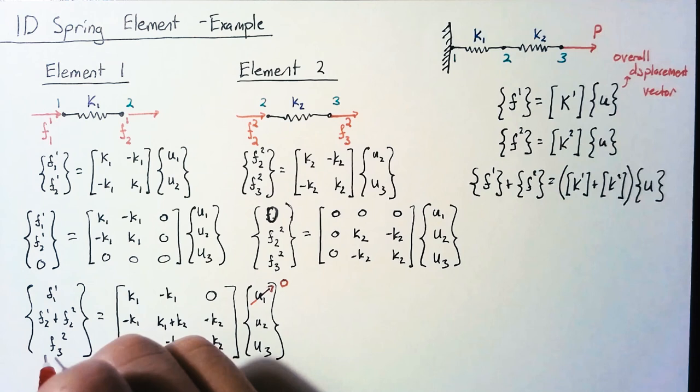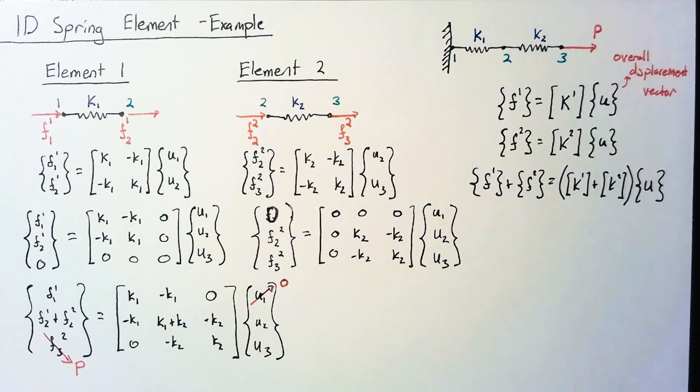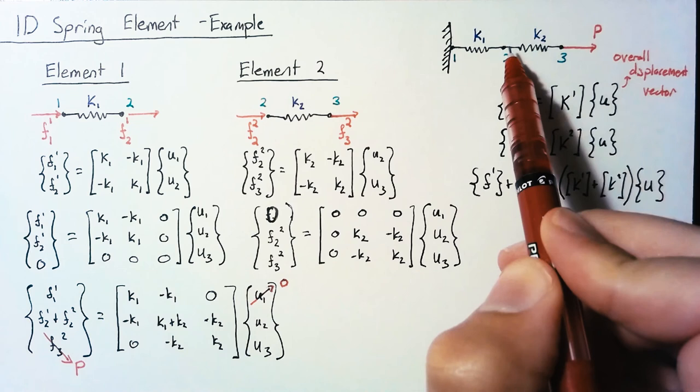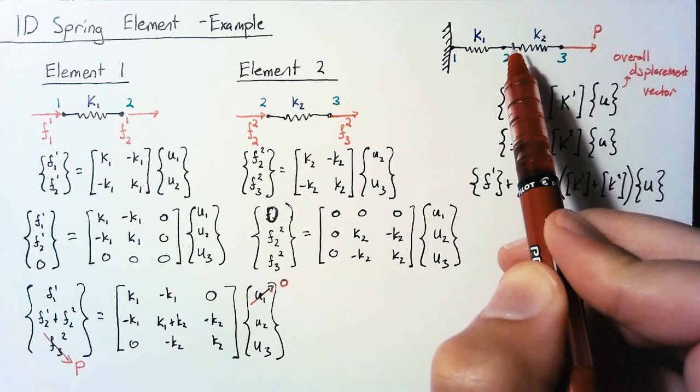Finally, looking at node two, we have two forces applied. We have F21 and F22. But in the overall sense, the sum of those two forces needs to be zero because there's no external forces being applied. So we can get rid of our F21 and F22 and say that those sum to zero.